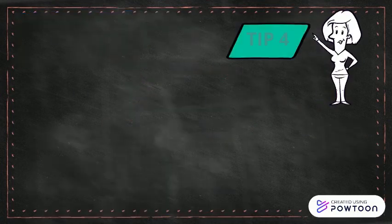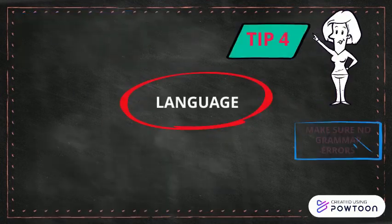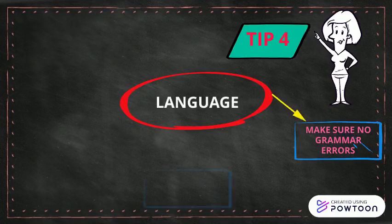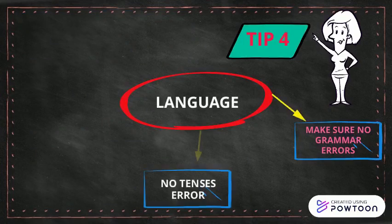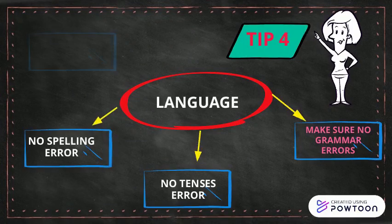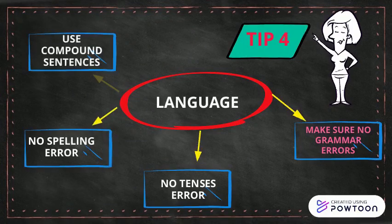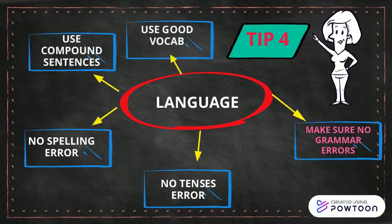The last tip is Tip 4, referring to language. How to score in language? Make sure there are no grammar errors, no tenses errors, no spelling errors. Practice using compound sentences and always use good vocabulary.